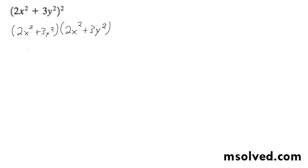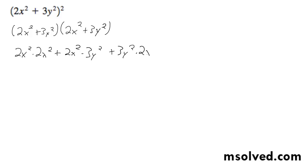So we get 2x squared times 2x squared, plus 2x squared times 3y squared, plus 3y squared times 2x squared, plus 3y squared times 3y squared.